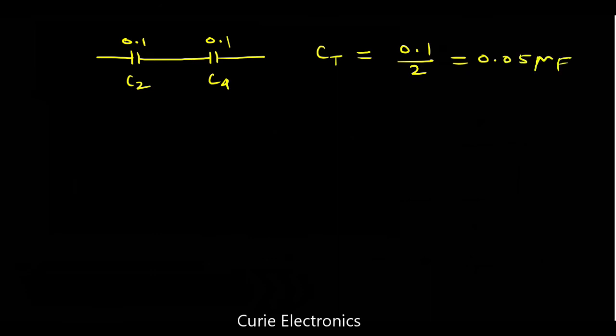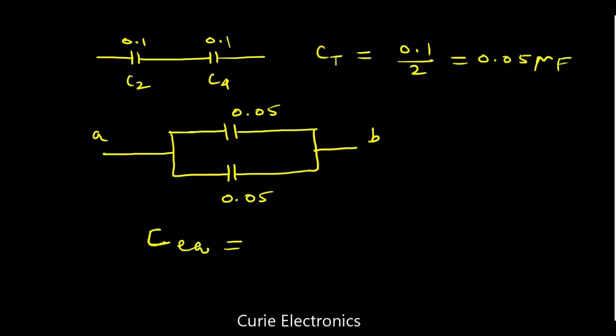Now, we have two 0.05 capacitors connected in parallel between A and B. So when two capacitors connected in parallel, what happens? The capacitance get added. So finally, C equivalent equals 0.05 multiplied by 2. So we will get 0.1 microfarad. So 0.1 microfarad is the answer for this question.